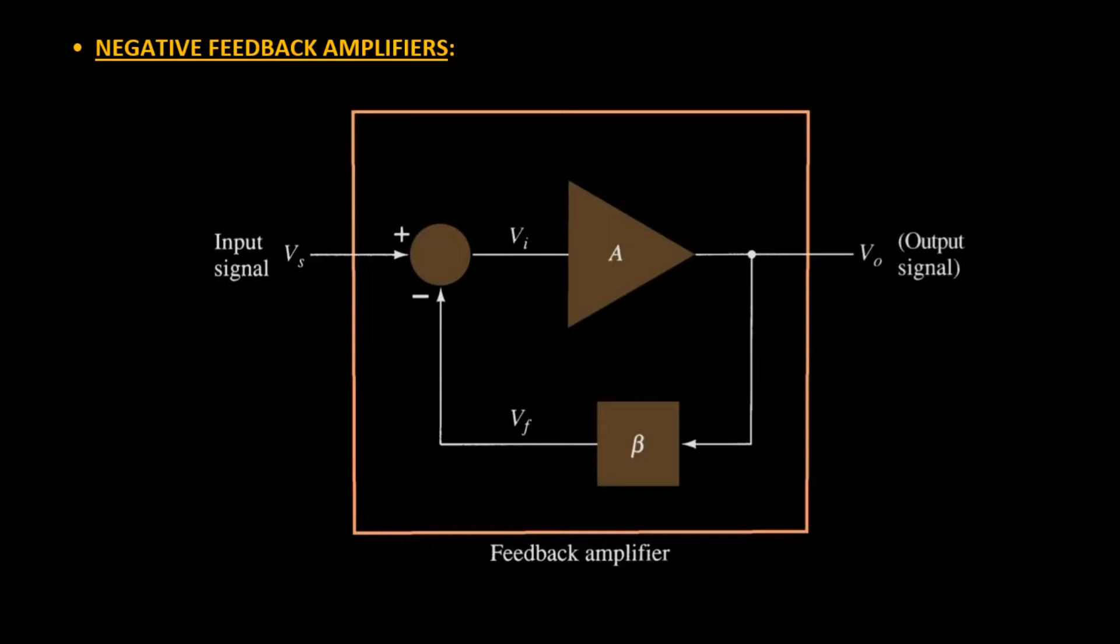Let us continue our discussion with negative feedback amplifiers. In the circuit diagram on your screen, you can see an amplifier with gain A and another amplifier with gain beta. So A is the amplifier placed on the forward path and beta is the feedback amplifier gain. Here Vs is the input signal, V0 is the output signal, and this is the mixer circuit.